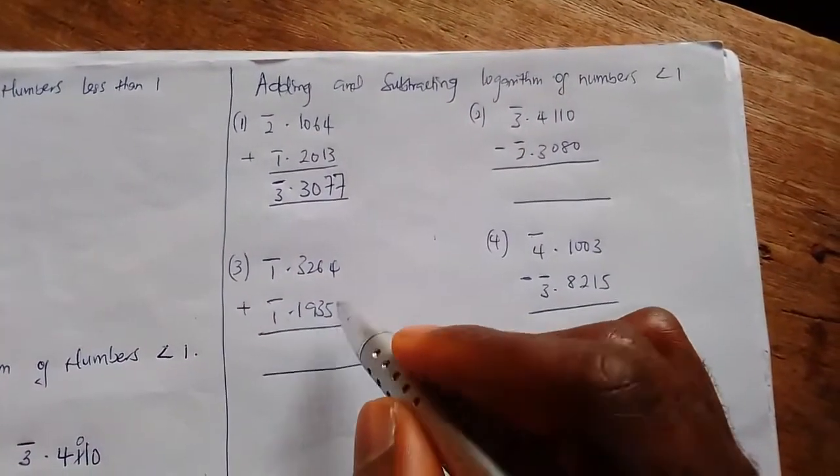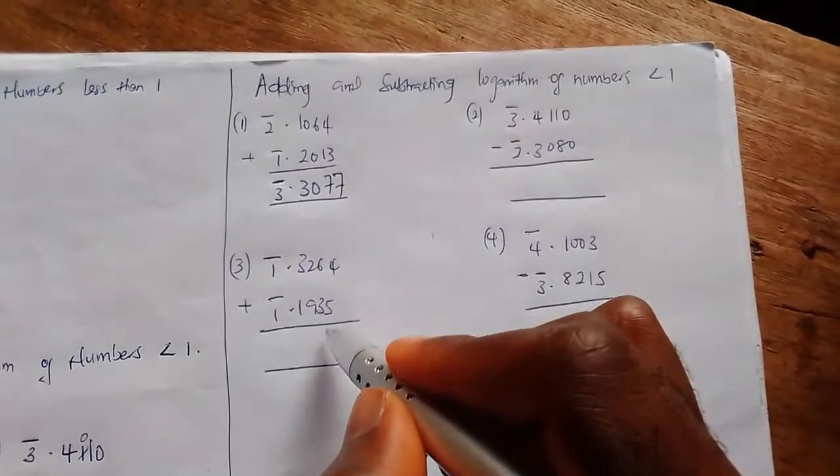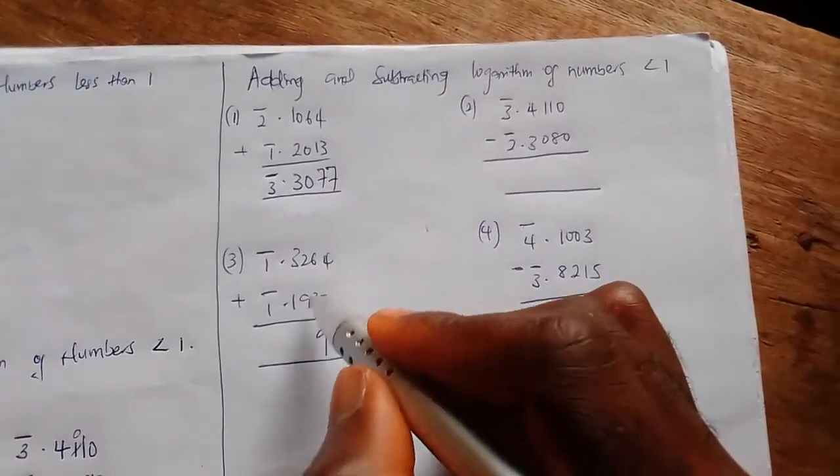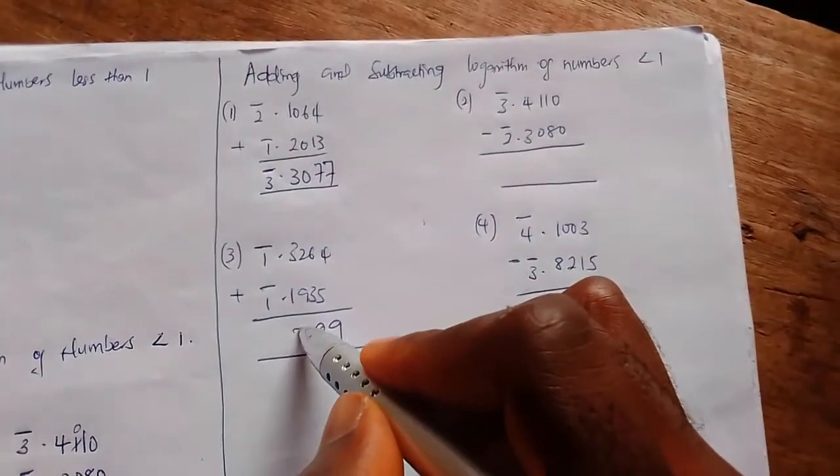Now let's do number three, which is also addition. Four plus five eight gives us nine, six plus three gives us nine, two plus nine gives us eleven. One plus three plus one gives us five, then bar one plus bar one gives us bar two.